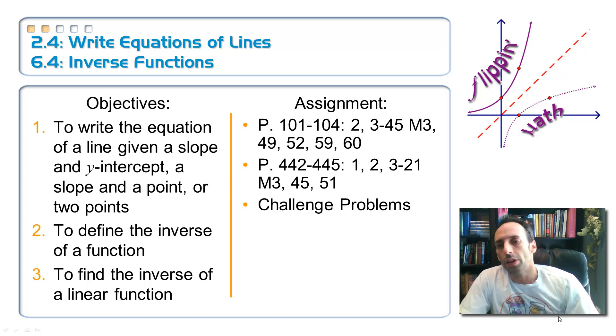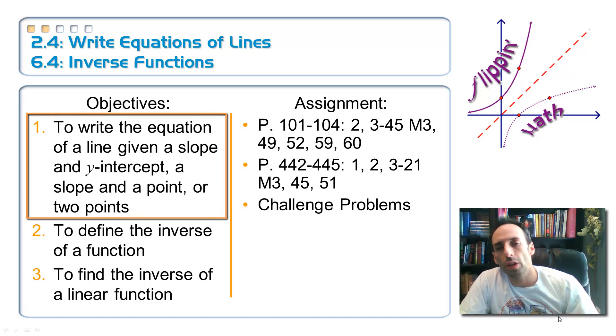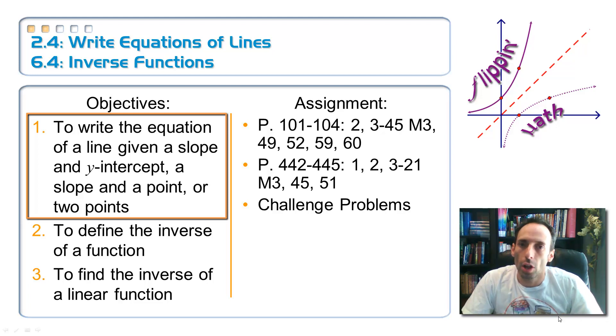So our objectives: number one, write the equation of a line given a slope and a y-intercept. That's the easiest way to do it. Still on that same one, how about a slope and a point? A little bit harder. Or maybe I just give you two points, write the equation of that line. That's probably the toughest one and even that's not that tough.